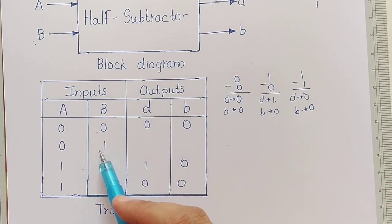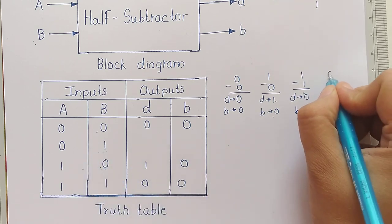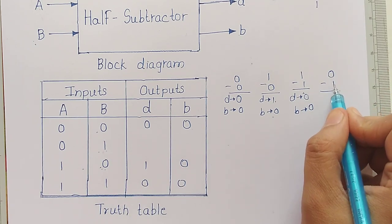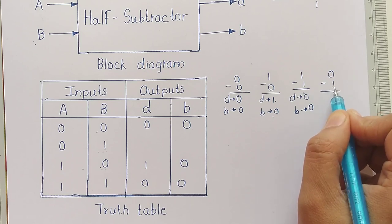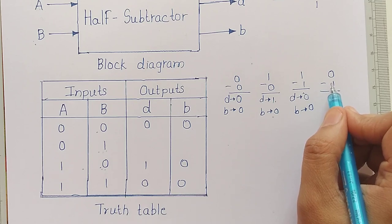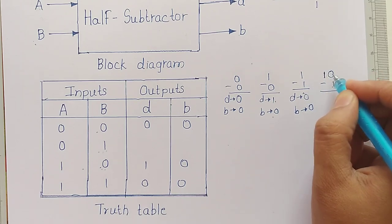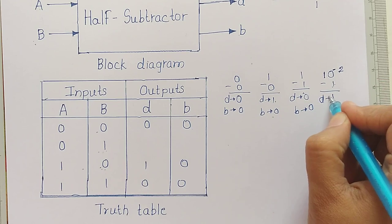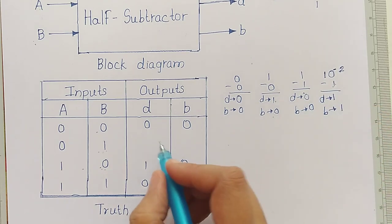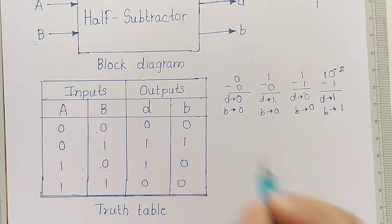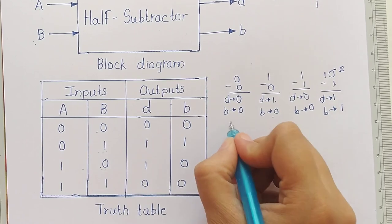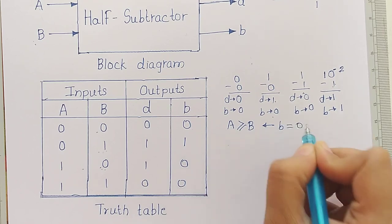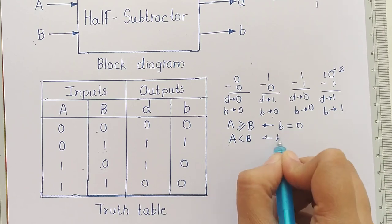Second case: 0 minus 1. Here we are subtracting 1 from 0. Since 1 is greater than 0, we cannot subtract directly, so we need to borrow from the next stage. With the borrow, 0 becomes 10 in binary, which is 2 in decimal, so 2 minus 1 equals 1. Thus the difference is 1 and the borrow bit is set to 1. From the truth table, when A is greater than or equal to B the borrow bit is 0, and when A is less than B the borrow bit is 1.